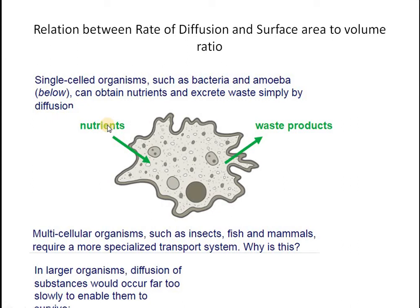The arrows in the diagram are showing that nutrients can be taken into the cell and waste material can be expelled out of the cell by simple diffusion. The rate of diffusion is quite quick and efficient enough to let this bacterium survive, so that the requirement of that single-celled organism is fulfilled.